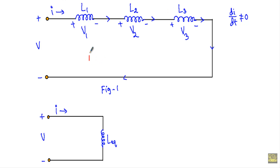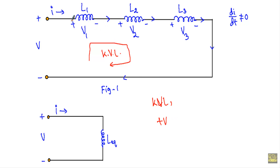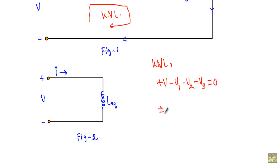Now applying KVL in figure 1, I first encounter the negative terminal then the positive terminal, giving plus V. Then I encounter positive terminal first then negative terminal, giving minus V1, minus V2, minus V3, equal to 0. So I can write: V equals V1 plus V2 plus V3. This will be equation number 1.